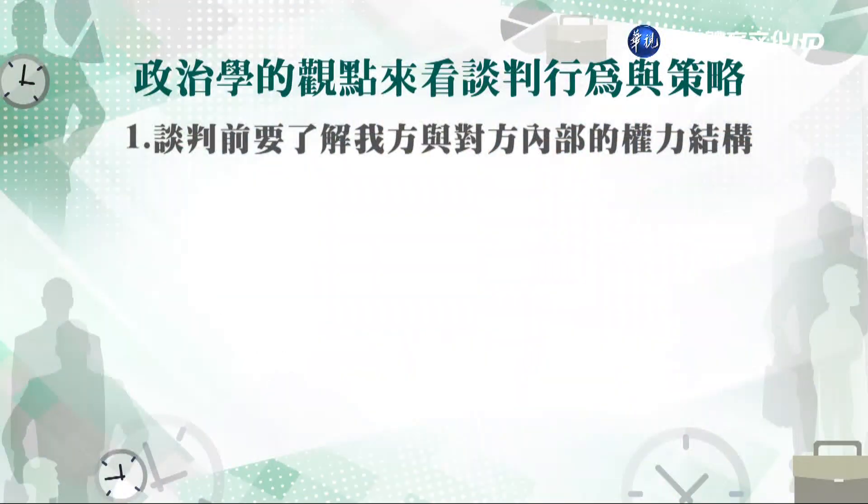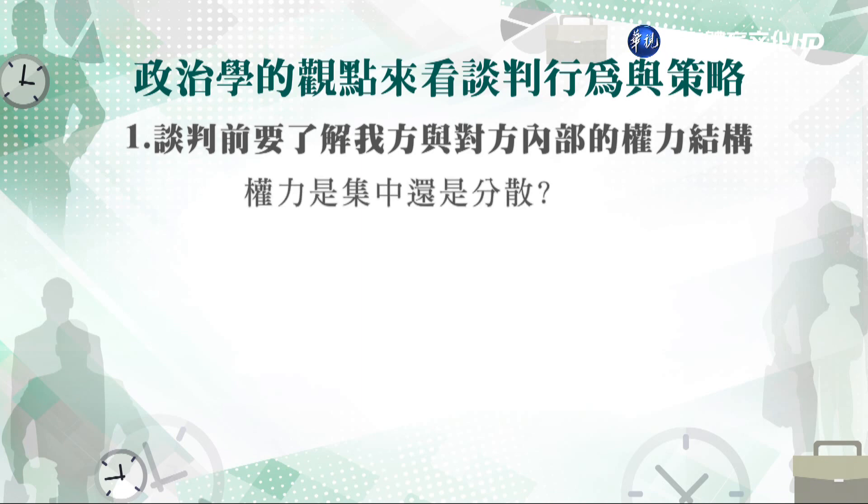你要去關注、觀察這個原來屋主：雖然所有權力是先生的名字，但或許太太的權力比較大，或太太扮演關鍵角色；或者反過來，房屋看起來是太太掛名但實際上是先生在做主。所以你面對的不是一個人，而是一個家庭。第一點，談判之前我們要先了解我方跟對方內部的權力結構，權力是集中的還是分散的，以及誰是key person（主要的關鍵人物）。